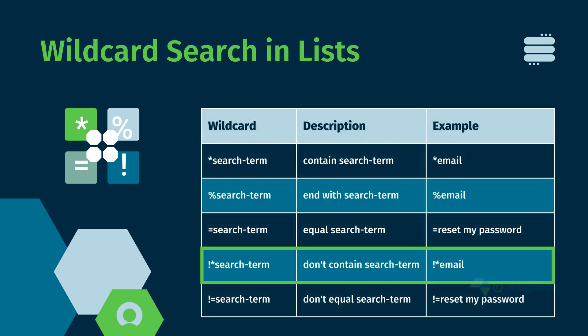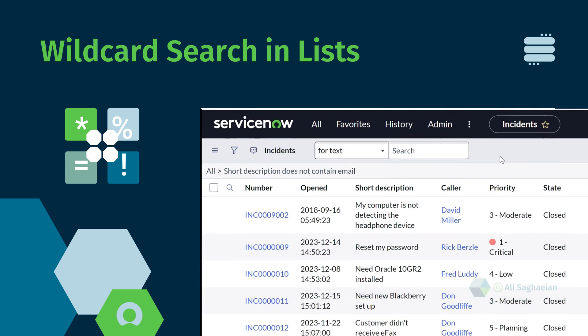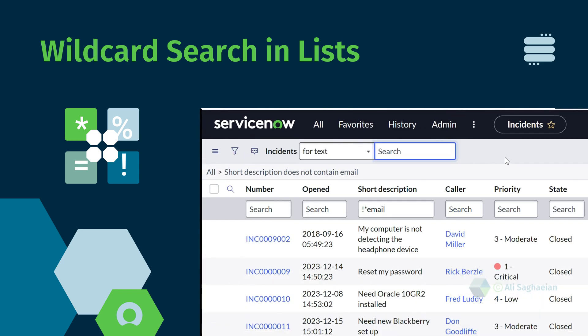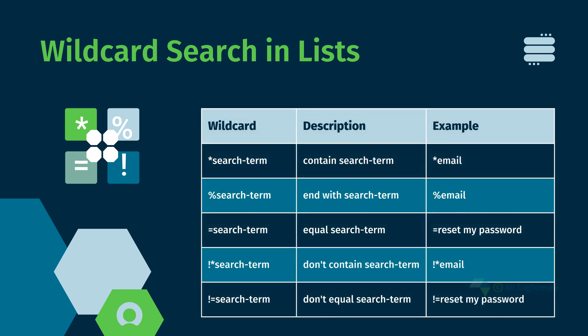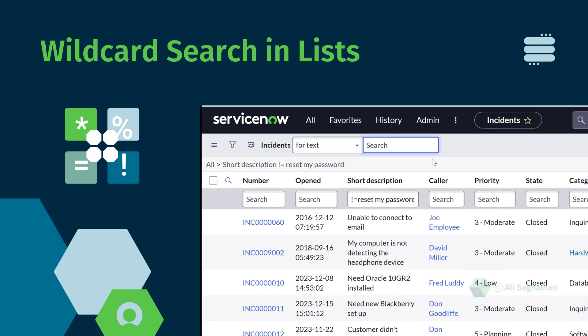You can also use the exclamation mark to get the opposite results. For example, starting with an exclamation mark and then an asterisk with a search term searches for values that don't contain that search term. Starting with an exclamation mark and then the equal sign searches for values that don't equal that particular search term.